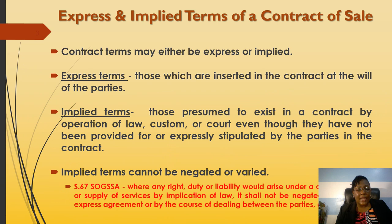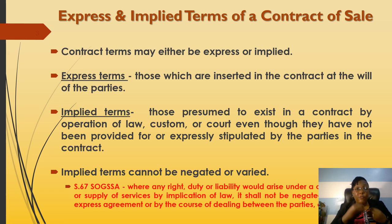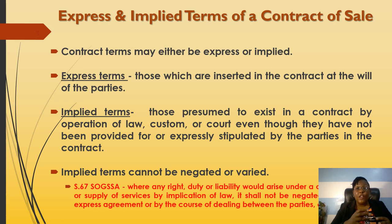When you talk about the terms of a contract, we're talking about those things that you agree to in the contract — what is it that you have put down in writing or agreed verbally. We have both express and implied terms. The express terms are the terms that are stated expressly either in writing or verbally by word of mouth. For example, if Jane is selling her car to Mary, Jane will tell Mary the price and Mary will say she wants a blue car — those are the express terms.